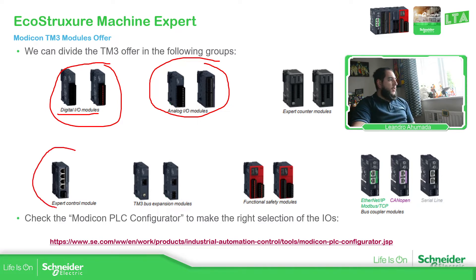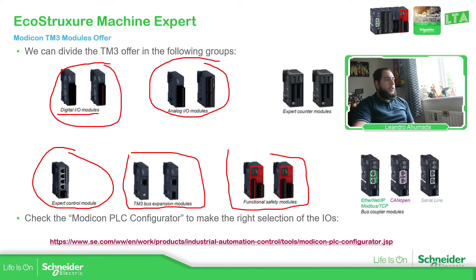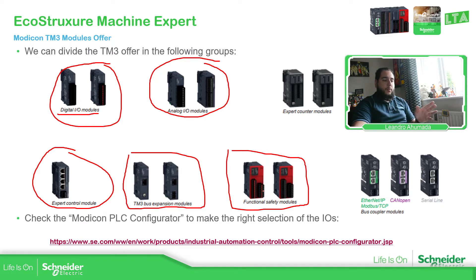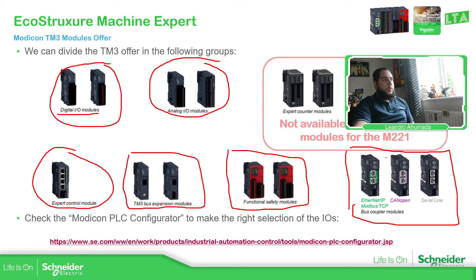We have this expert control module that allows us to control TeSys — one of the TeSys motors in the offer. And then if we need more IOs, because we have a limitation on the bus or the modules we have on the bus, we can use expansion modules. We also have the possibility to add safety modules that allow us to read information from the field. And then the latest one is the bus coupler, so instead of using the bus expansion as a remote IO, we can use the bus coupler to have distributed IO.